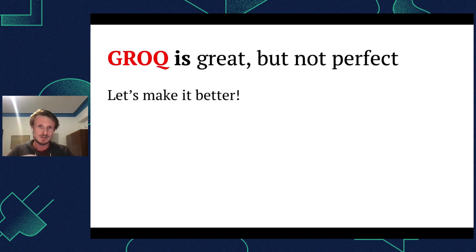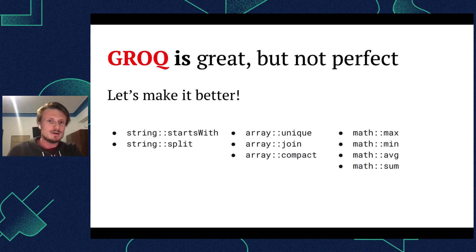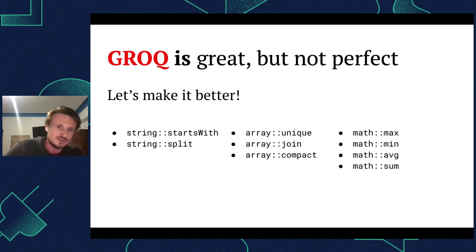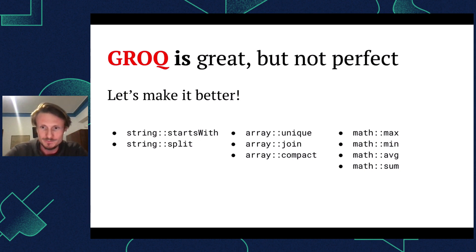We're also very much aware that GROQ is really far from perfect, and therefore we should make it better. This is what we've been starting to do — it's been a long project, longer than you might think, because a lot has been going on behind the scenes. A few weeks ago we released a new version which adds some new functionality: a bunch of new functions including string::startsWith, string::split, some array functions, and some math functions. All of this is available today.